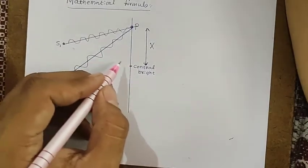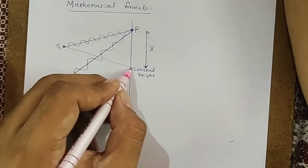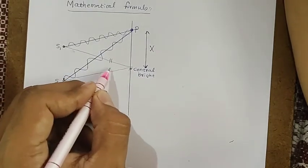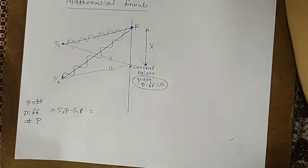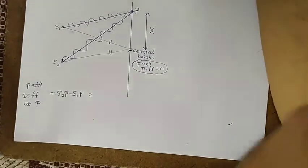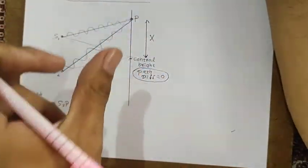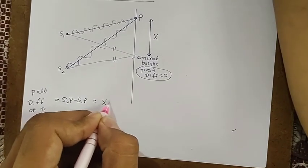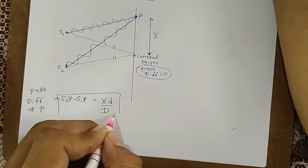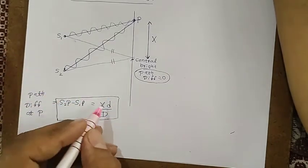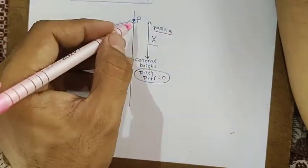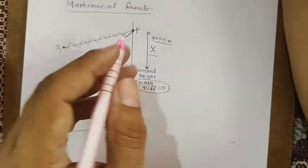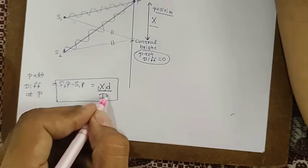For central bright, the path difference is zero because both paths are identical. For point P, path difference is S2P minus S1P. This is given by the formula: path difference equals X·d divided by D, where X is the position of point P on the screen, d is the distance between the two slits, and D is the distance from the slits to the screen. Different points on the screen will have different path differences.